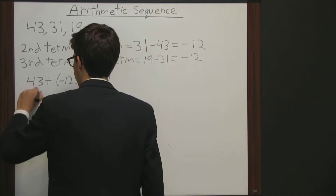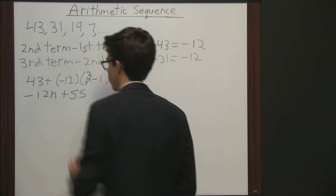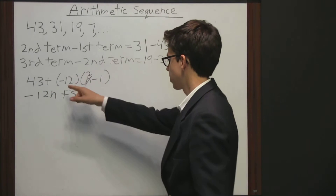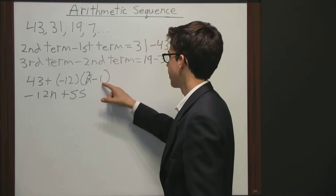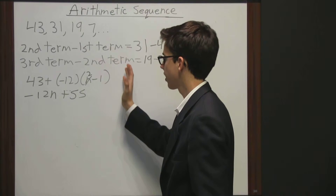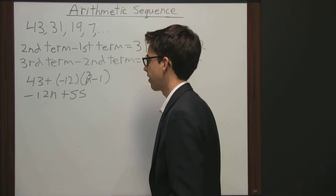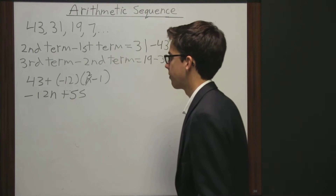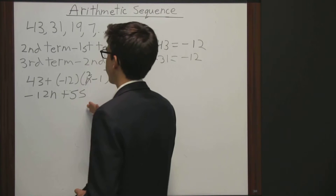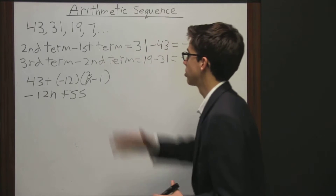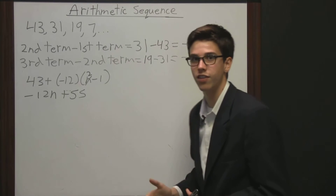I'm going to quickly simplify this for us to make it easier. The way this was simplified: we just multiplied negative 12 times n, then by negative 1, and then added some numbers together, and so we got the simplified equation. We're going to take this simplified equation and we can use this to determine what numbers are going to come later in this sequence.